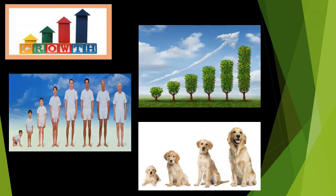Now let us see the growth of plants. When plants grow, there is an increase in the width and height of the stem. Some plants develop branches while others lack these. Plants keep on growing till they are alive. The growth of living things is from within the body and in all parts of the body.